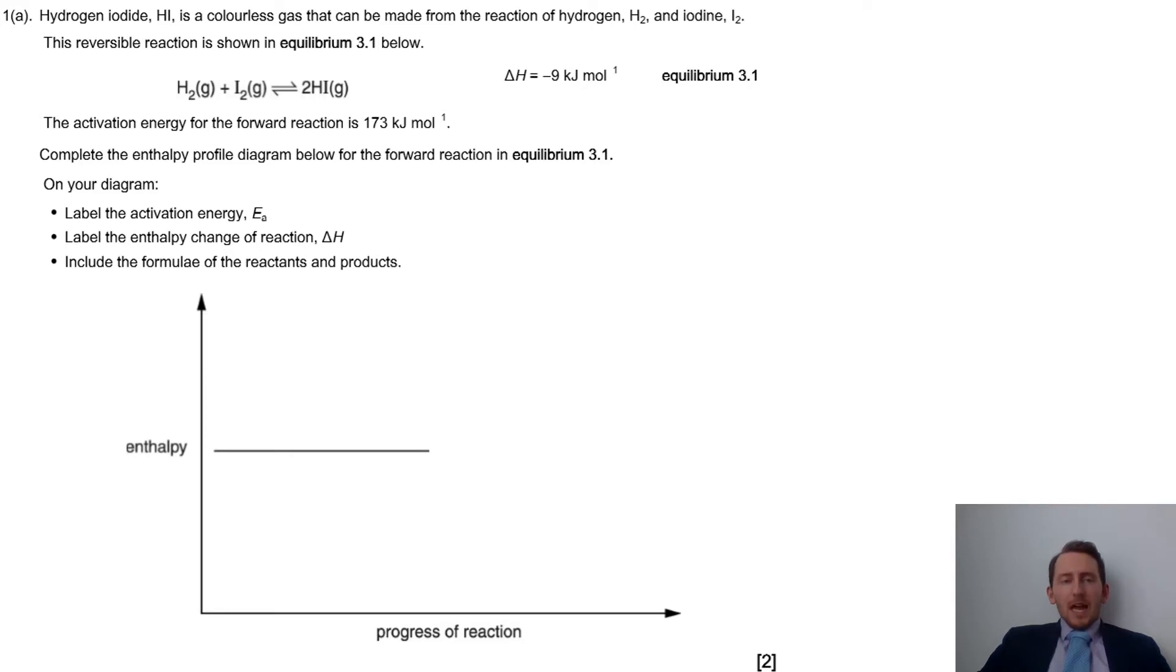an equilibrium 3.1. It's asked us to add the activation energy, enthalpy change delta H, and the formulae of the reactants and products. A couple of marks, and you've seen this before back at GCSE, so hopefully it shouldn't cause us too many problems.